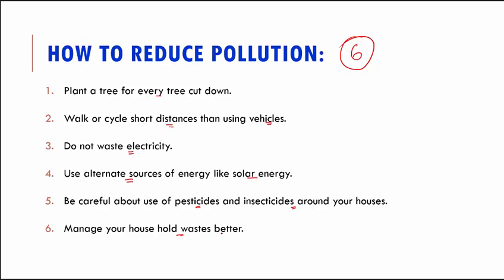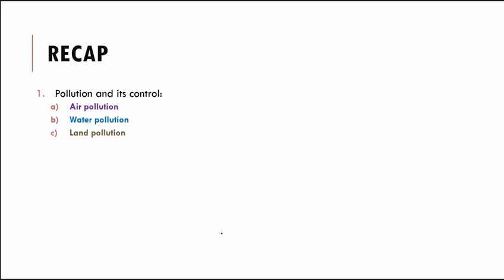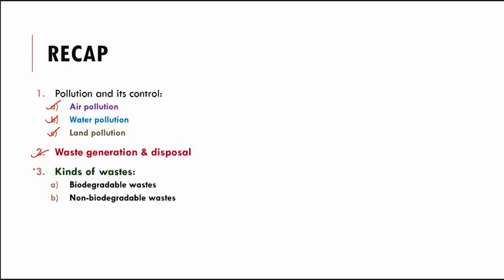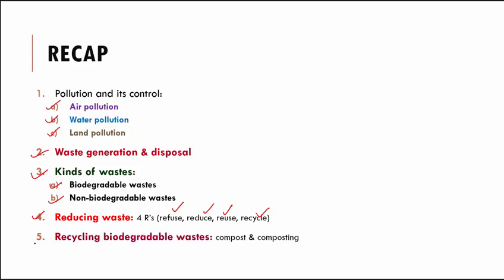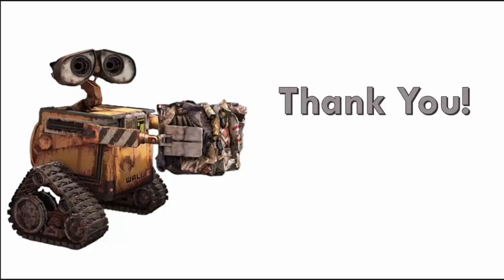Let's do a quick recap. We spoke about pollution and its control, covering three types: air pollution, water pollution, and land pollution. We discussed waste generation and disposal, and the two kinds of waste — biodegradable and non-biodegradable. We saw the four golden R's — refuse, reduce, reuse, and recycle — and how to apply them. We also covered composting biodegradable waste into manure, and the six important ways to reduce pollution. If you have any doubts, get back to us, and if you liked the video, hit the like button!